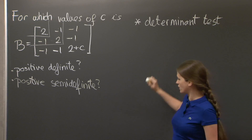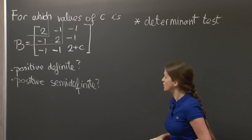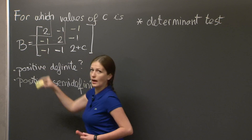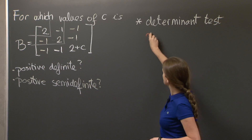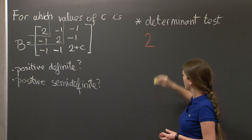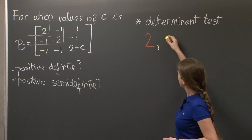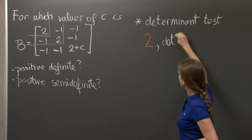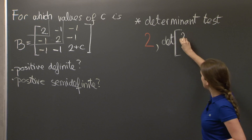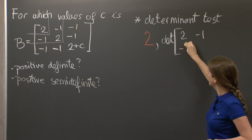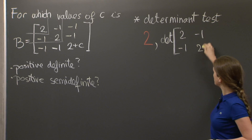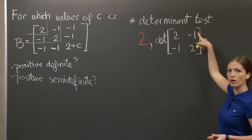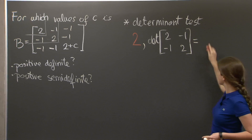So let's calculate the determinants. The first determinant is the determinant of this tiny matrix here, so it's just 2. The next one is the determinant of this 2×2 submatrix: 2, -1, -1, 2, which is equal to 4 minus 1, which is 3.